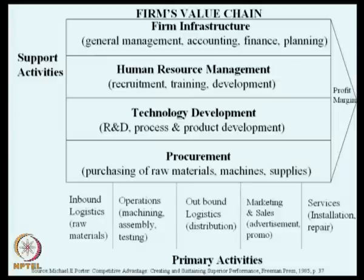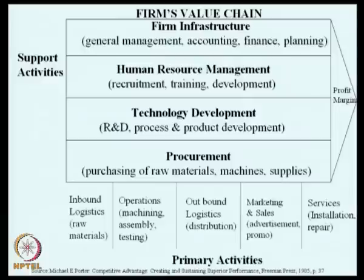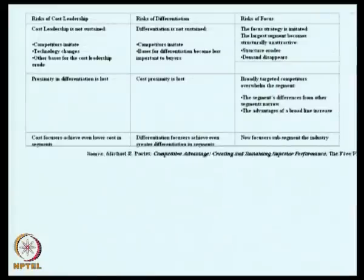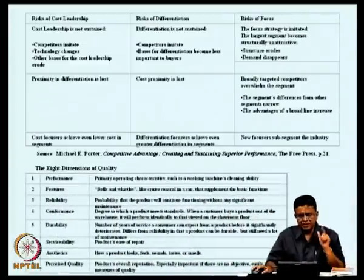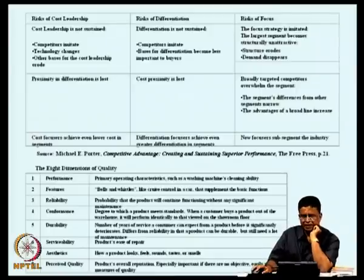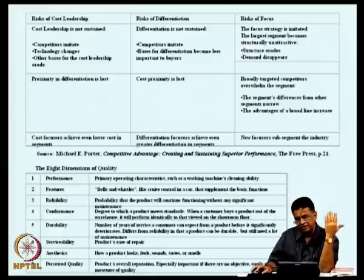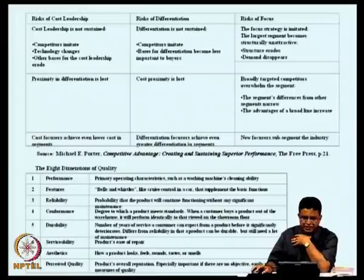The primary activities mainly are the inbound logistics, operations, outbound logistics, marketing and sales, and services. The support activities are the firm infrastructure, human resource management, technology development, and procurement. We also listed when vendors' cost leadership is not sustained, when differentiation is not sustained, and when focus is not sustained as a strategy route.